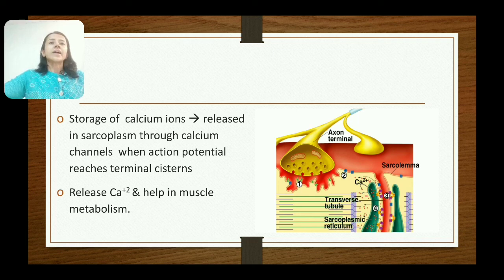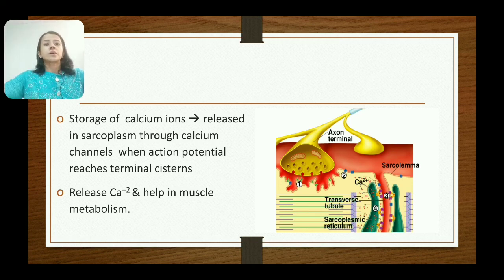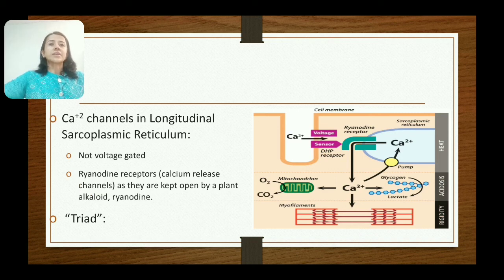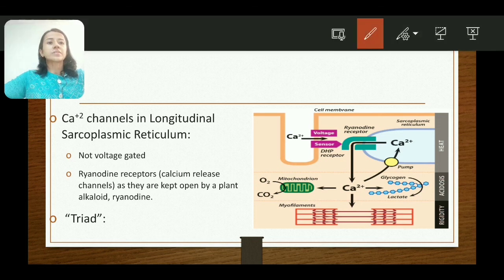The terminal cisternae store a large quantity of calcium ions. When an action potential reaches the terminal cistern, these calcium ions are released into the sarcoplasm through calcium channels, thus helping in muscle contraction and muscle metabolism. These calcium channels are located in the longitudinal sarcoplasmic reticulum, are not voltage-gated, and allow release of calcium ions into the cell. They are known as ryanodine receptors, as they are kept open by the plant alkaloid ryanodine, and are also known as calcium release channels.